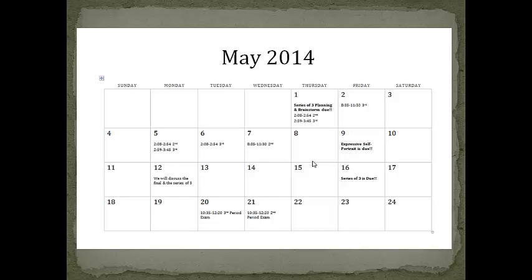The third thing in your packet is a calendar. It's marked with your EOCT times, the classes you'll get to see me, and when your projects are due. Your expressive self-portrait is due on the 9th, your series of three is due on the 16th, and your final exam will be on the 20th and 21st of May. These are tentative — they might change.